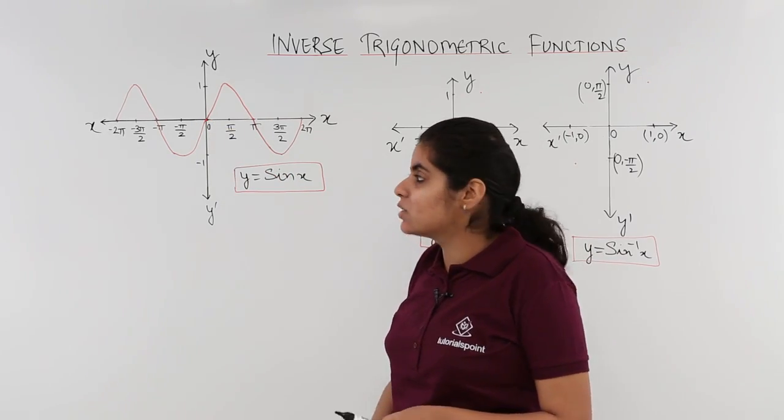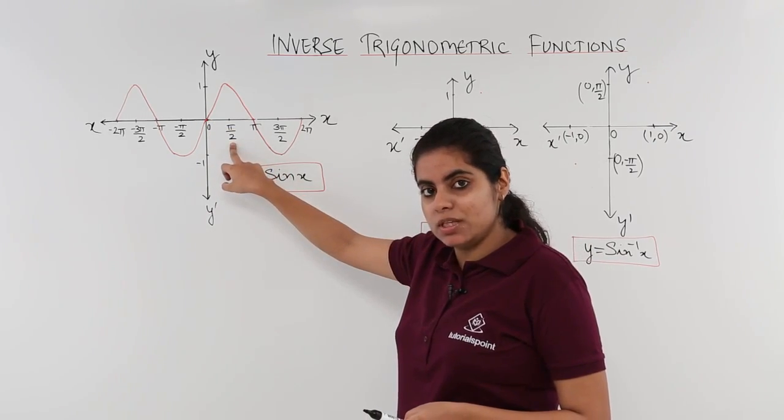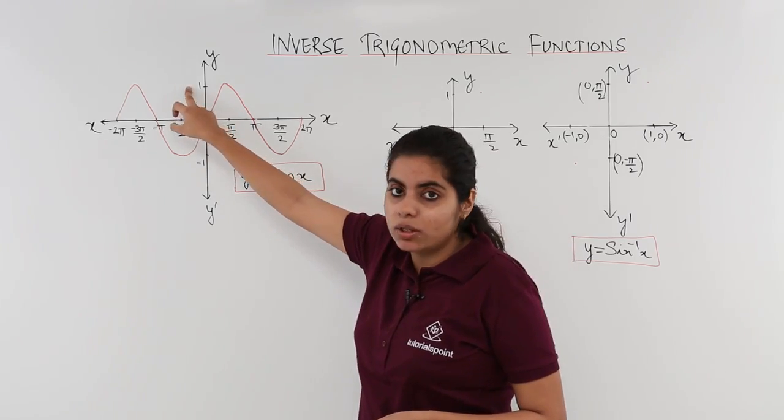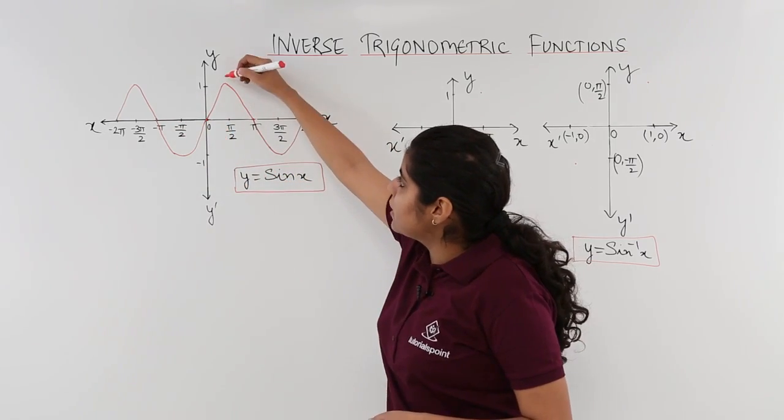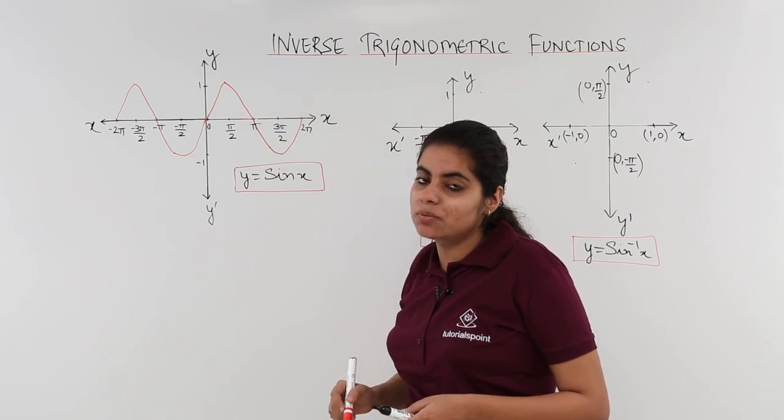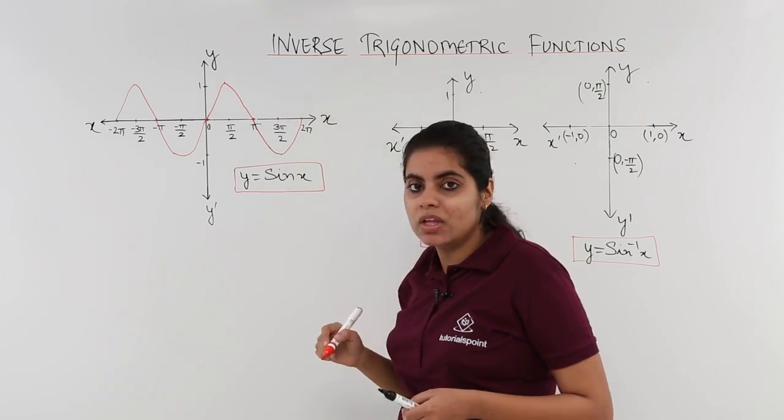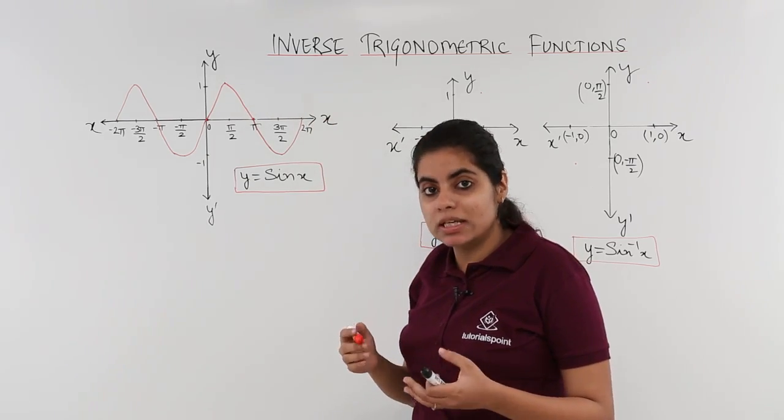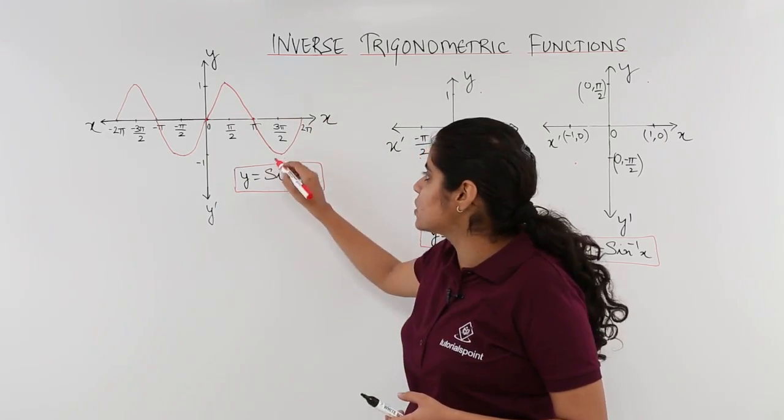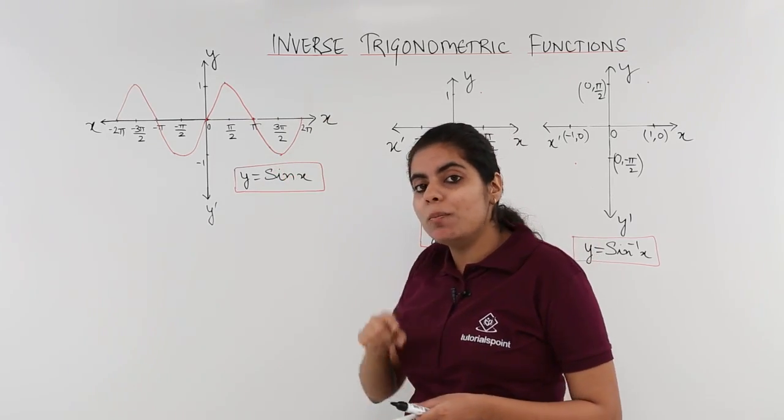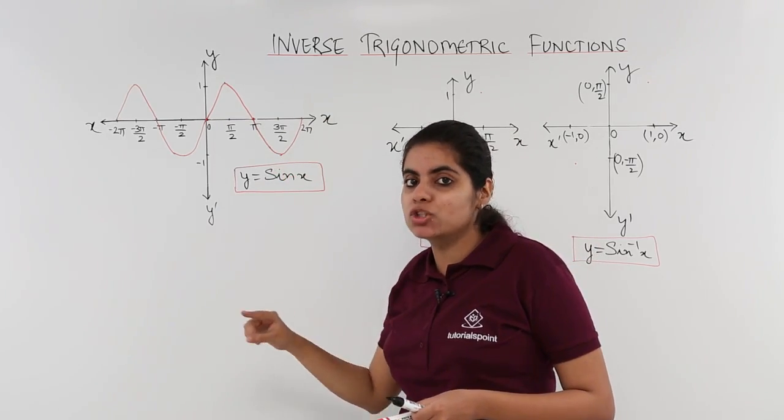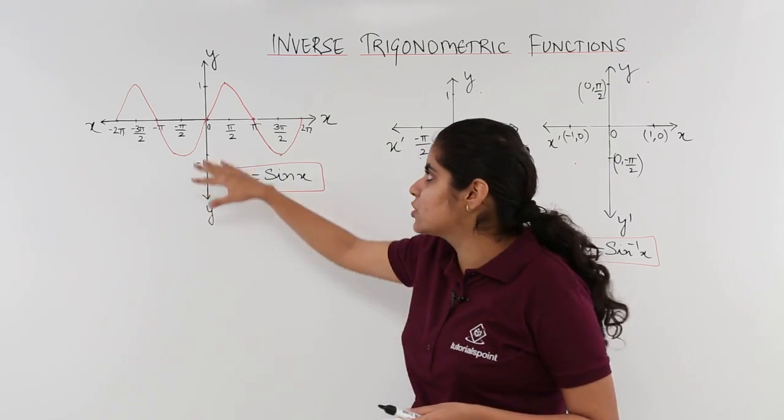Sin π/2 is 1, so where is π/2? π/2 is here, where is 1? 1 is on the y-axis here, so π/2 and 1 will give me this point. Similarly, sin π is 0, so sin π will be here. Sin 3π/2 is again 1 in the negative direction, so it is here and so on. So by plotting these points, by joining, you get a sin curve which is already drawn.